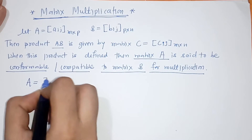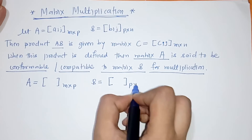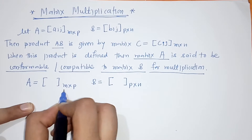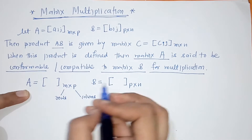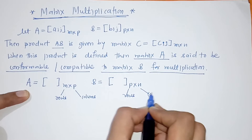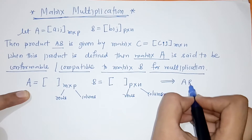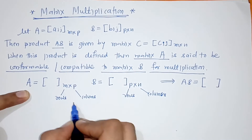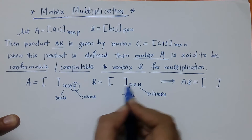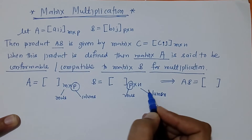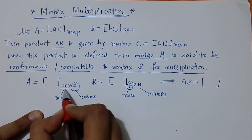We have matrix A of order M by P and matrix B of order P by N. M represents the number of rows of matrix A, and P represents the columns of matrix A. Similarly, for matrix B, we have rows and columns. Their product AB is defined when the number of columns of A is equal to the number of rows of the second matrix, and the product order is given by the remaining M and N.